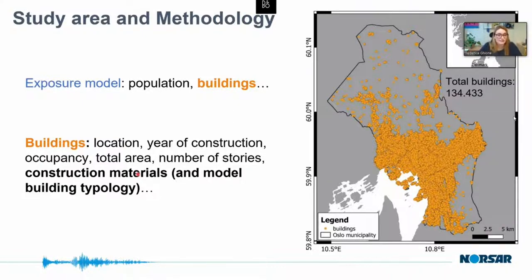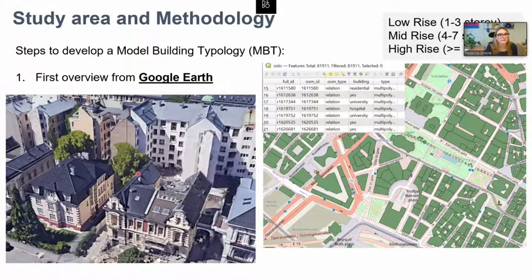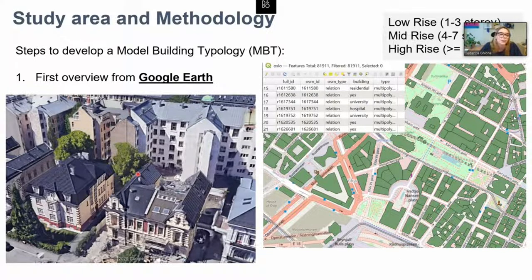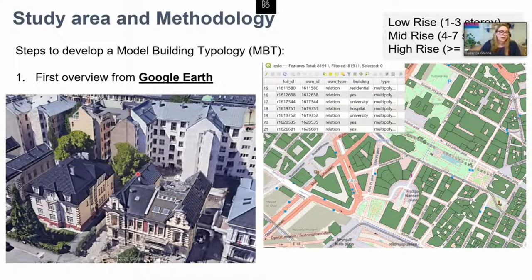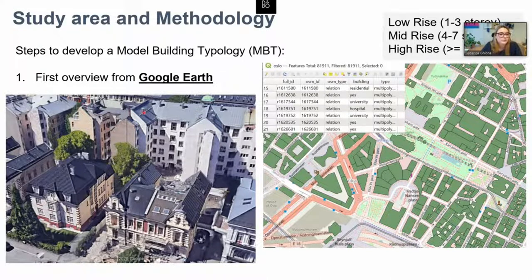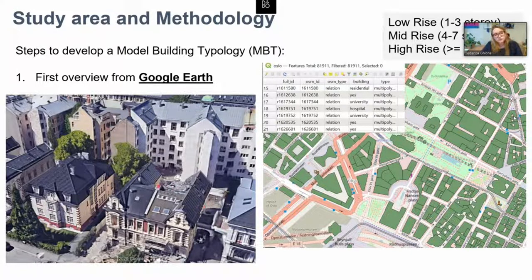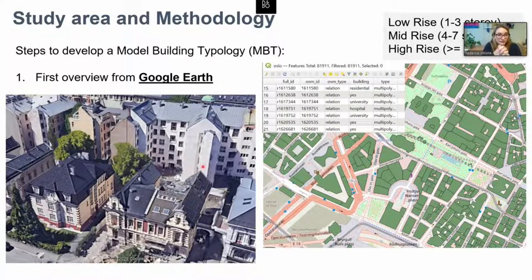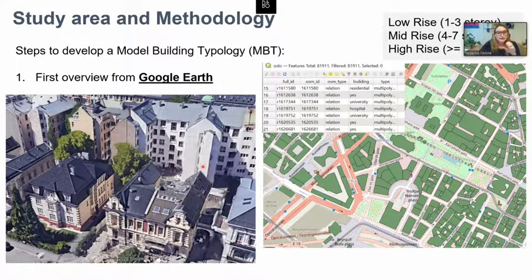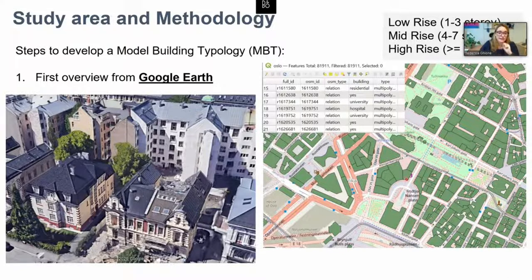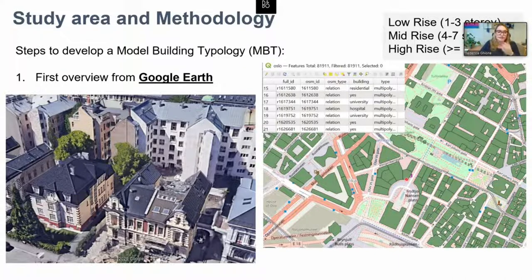In Oslo, we have all these source data available, but we are lacking the construction material of the building. And it's quite common, not only in Norway but also for other countries, to miss this kind of data. And the common practice is to gather this kind of information by sending people to walk around the city and to collect manually this information for each building. And you can get this kind of approach with high costs and time consuming.